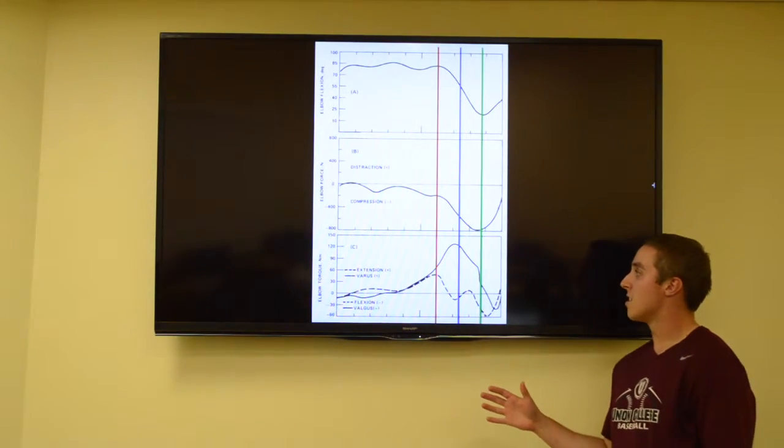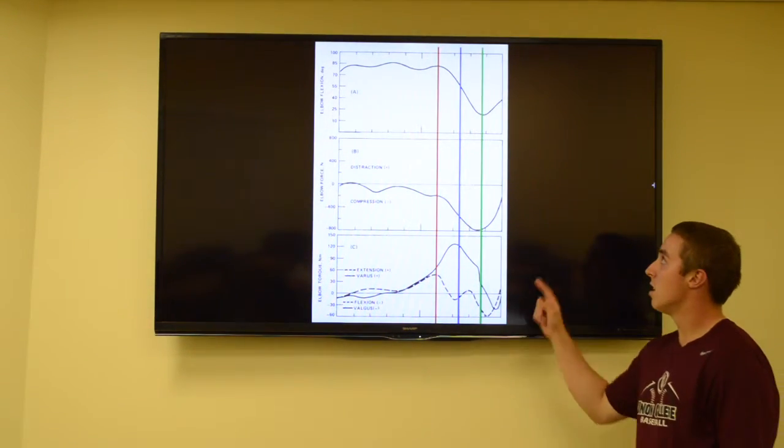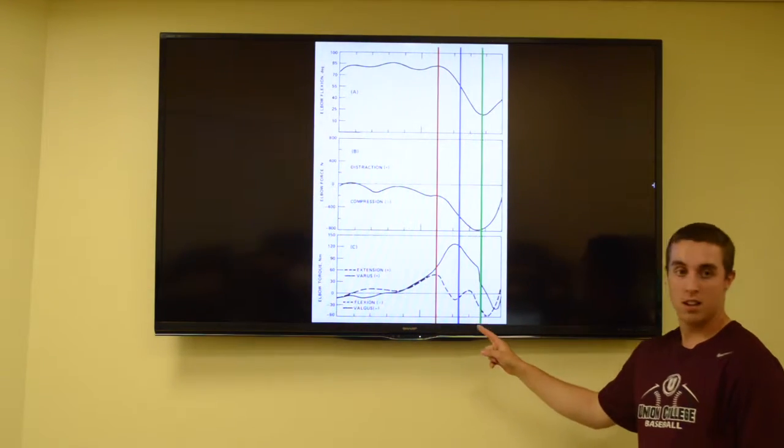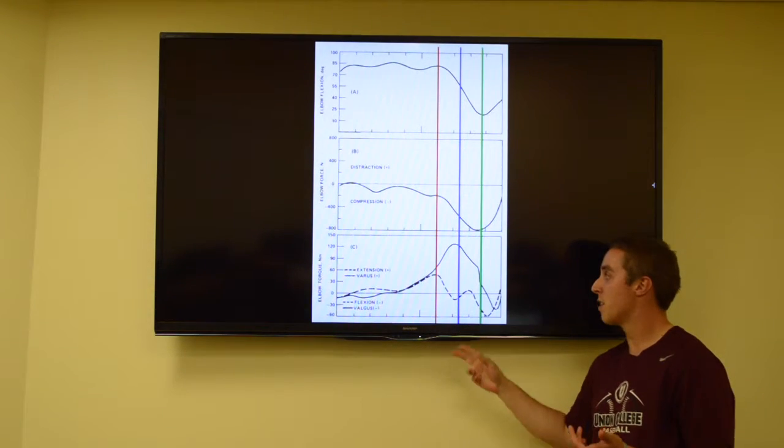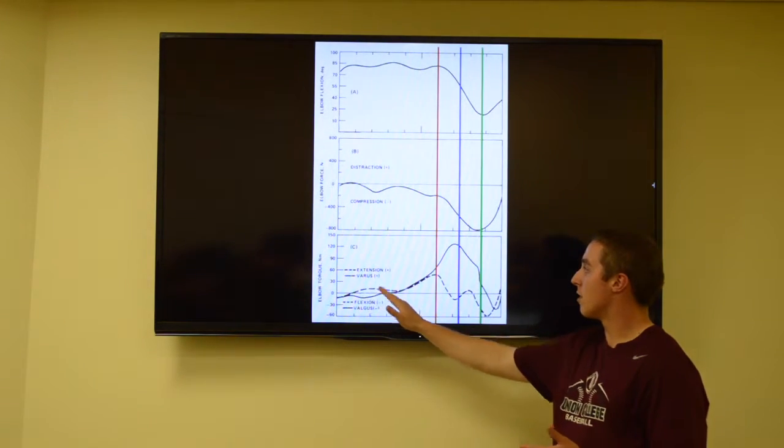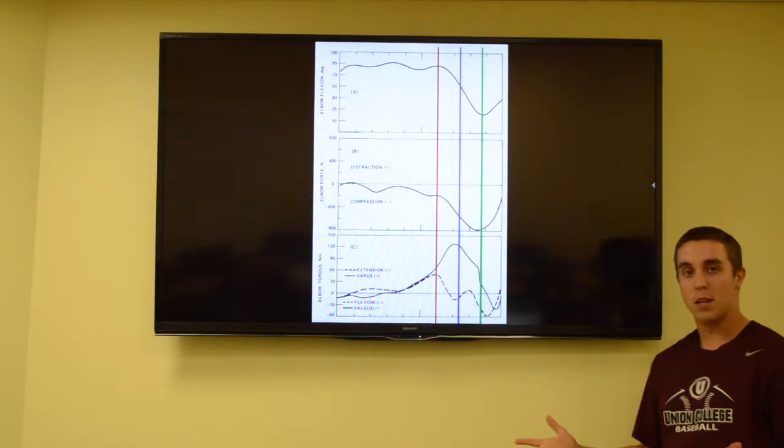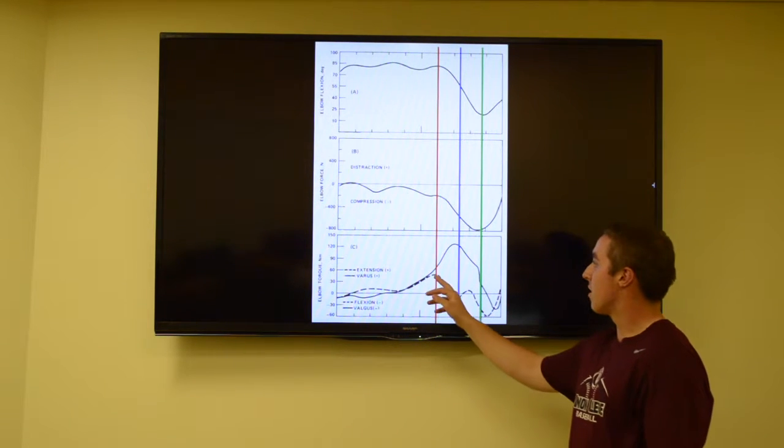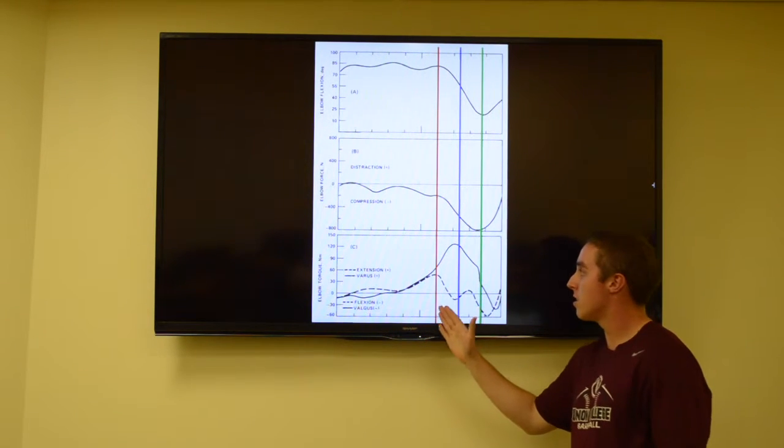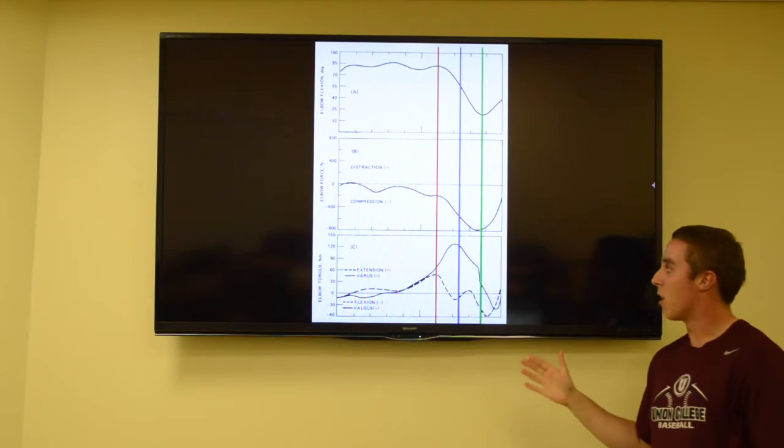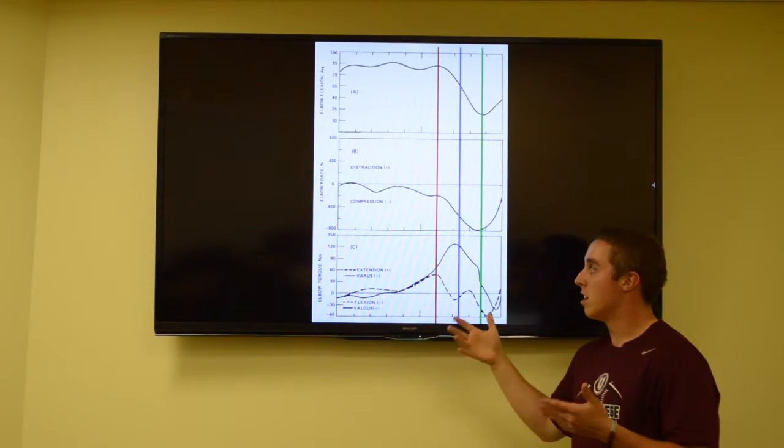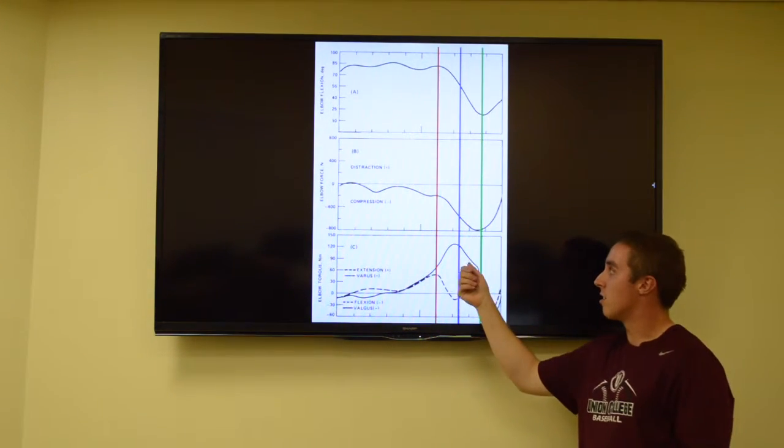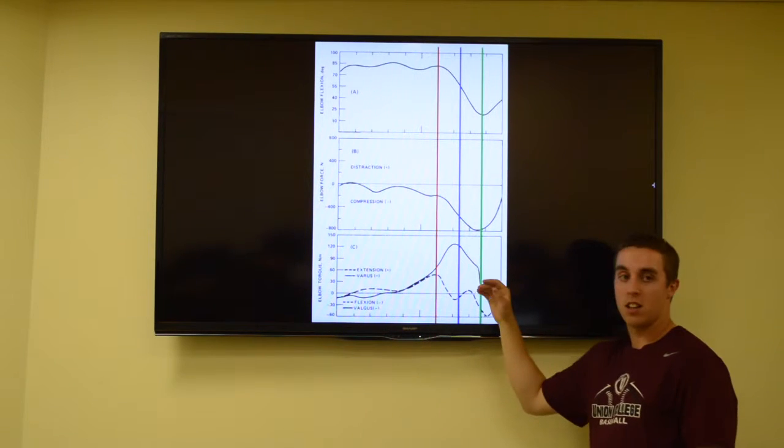Now we're going to be analyzing these three diagrams which are measuring the elbow flexion, the force of the elbow, and the torque on the elbow during pitching. We can almost ignore everything before this red line as that's just the basic parts of the wind-up and breaking of the hands while pitching. Right at this red line is the arm cocking phase, which is really where all the force and everything is going to start accumulating. This is going to build up for max external rotation at this point, which starts the arm acceleration phase.